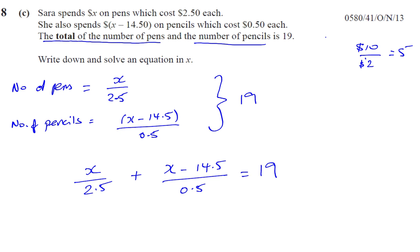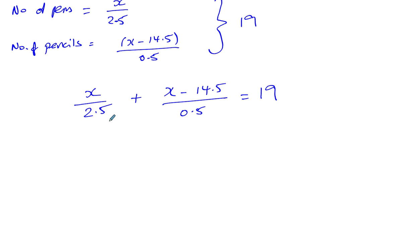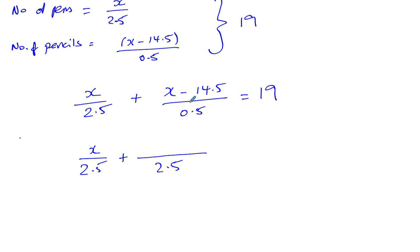So I want to solve this equation. This is an algebraic equation. One way to do it is to make the denominators the same. If I multiply both top and bottom of the second fraction by 5, I'll get 2.5, since 0.5 times 5 is 2.5. So multiplying both the numerator and denominator of that fraction by 5 makes an equivalent fraction with denominator 2.5. That gives us 5 times (X minus 14.5), and that equals 19.